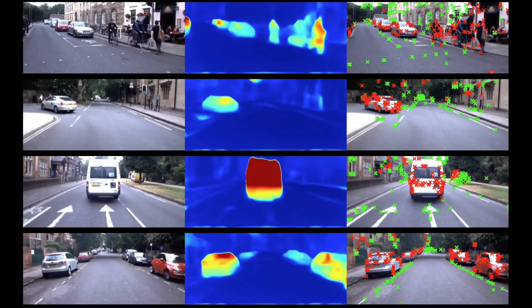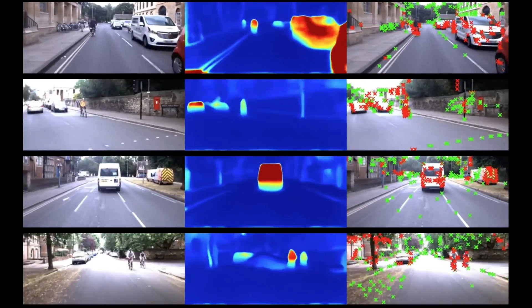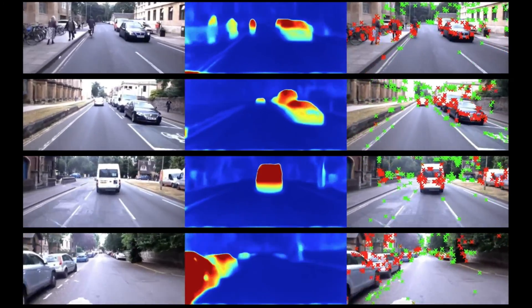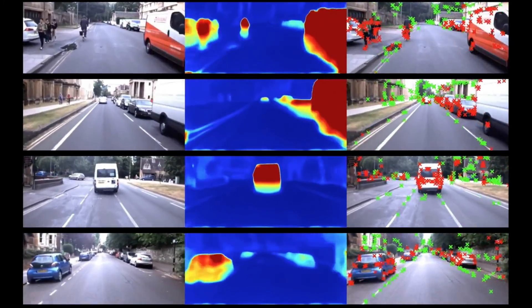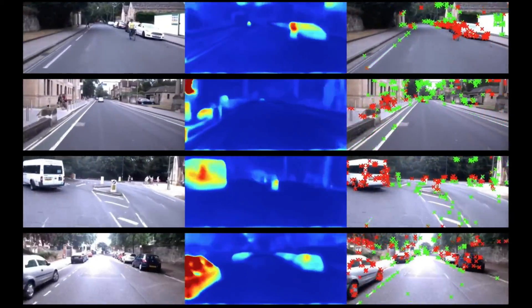Our ephemerality aware visual odometry systems outperform baseline approaches with reduced average odometry drift and significantly improved ego motion estimation in the presence of large distractors such as moving vehicles in urban traffic.